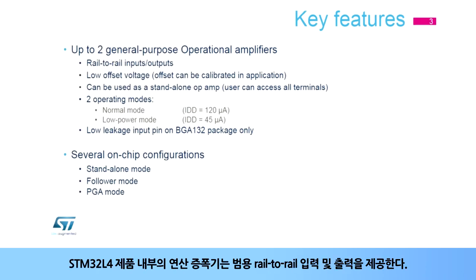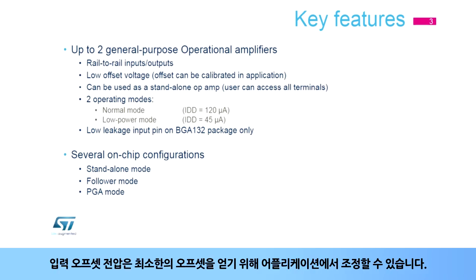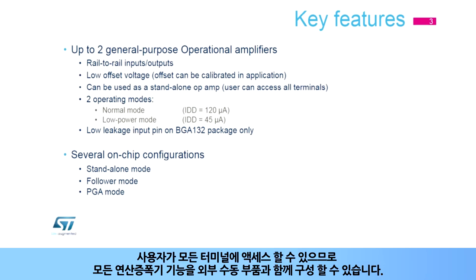The operational amplifier inside STM32L4 products offers general-purpose rail-to-rail inputs and outputs. The input offset voltage can be calibrated in the application to achieve minimal offset. All the terminals are accessible by the user so that any operational amplifier function can be configured with external passive components.